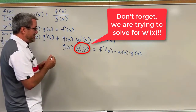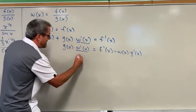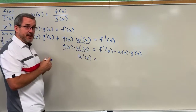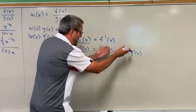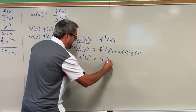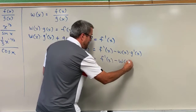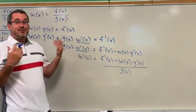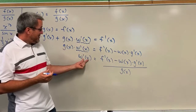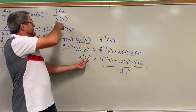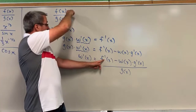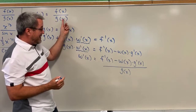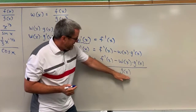Remember, the goal is to solve for w prime of x. We're going to make one last move — divide both sides by g of x. If I divide by g of x on the left side, we'll divide out that g of x, since g of x divided by g of x is 1, so we'll just get w prime. And if we divide by g of x on this side, we'll have f prime of x minus w of x times g prime of x, all divided by g of x.